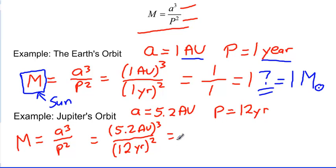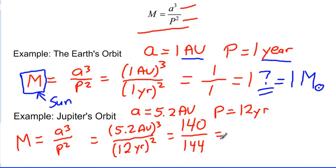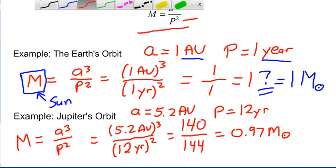Not quite as simple this time. What is 5.2 to the third power? Using a scientific calculator, 5.2 cubed gives about 141 — let's say about 140. And what is 12 squared? About 144. So 140 over 144 gives us 0.97. We get almost exactly one solar mass, with a little bit of rounding in our estimated numbers. If we used more exact values, we'd get even closer.